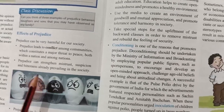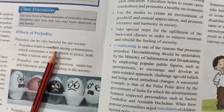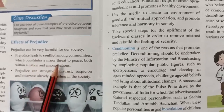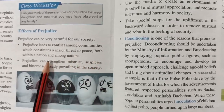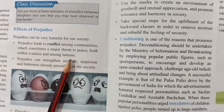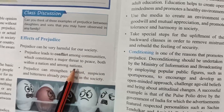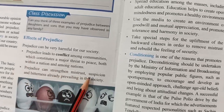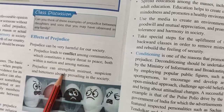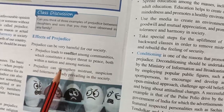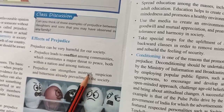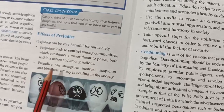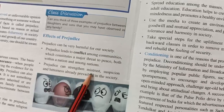Now we understand the effects of prejudice — how prejudice affects our society and how it is harmful. Prejudice leads to conflict — it can create fights and disputes among communities, because of which our country's peace can come under threat, both within a nation and among nations. For example, India's conflict with Pakistan is also rooted in prejudice. Prejudice can also strengthen mistrust — people don't trust each other, view each other with suspicion, and there is bitterness between them. Prejudice strengthens all these things.